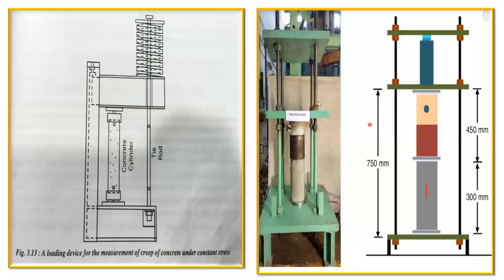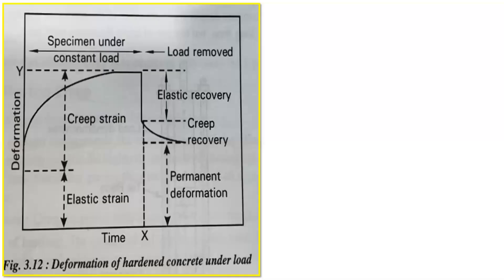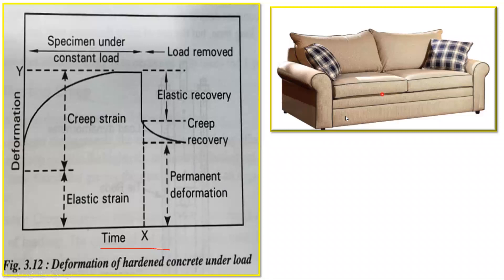To understand this more practically, we'll look at a graph with time on the x-axis and deformation on the y-axis. Imagine a sofa set — you come and sit on it directly. The moment you sit, a small deformation happens and it goes down. When you get up, it recovers, because it is elastic strain. So at time t=0, there is a certain instantaneous deformation, and when you remove the load it recovers — that's why you see a straight line on the graph.